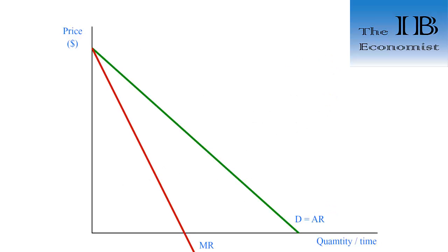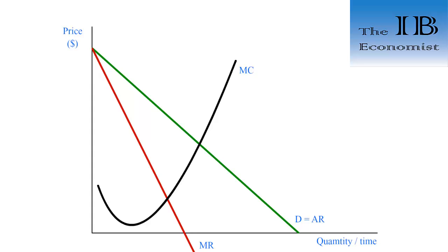Most of the time you would want to draw the cost curves together with a demand curve and a marginal revenue curve. In this example we have a downward-sloping demand curve which is also equal to average revenue, and a steeper marginal revenue curve. We draw the cost curves in the same order. First we draw the marginal cost curve, and then we can find the point of intersection between marginal cost and marginal revenue to find the price and quantity at which this firm maximizes profit.